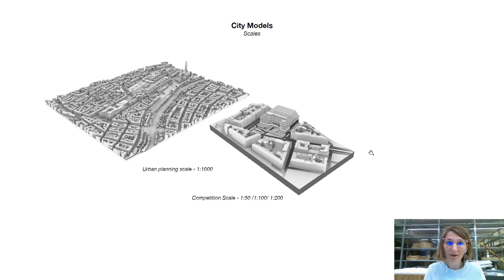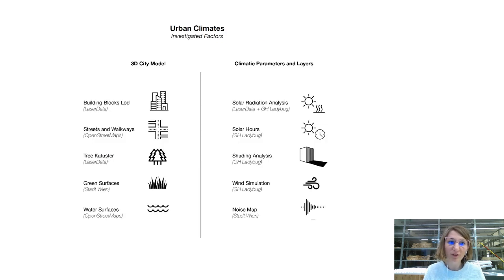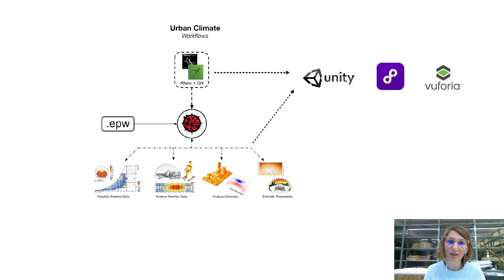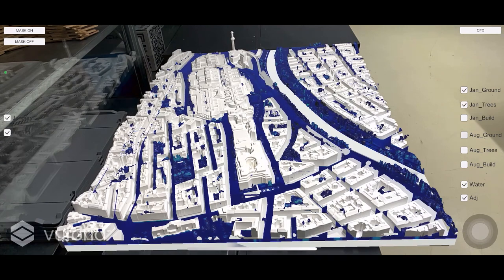Hello everyone. From an architectural standpoint, we analyze urban heat islands through two different city scales: one to 1000 and one to 200. We looked at data from laser scanning and investigated different climatic parameters and layers using Rhino, Grasshopper, Ladybug, Unity, Phologram, and Buforium.